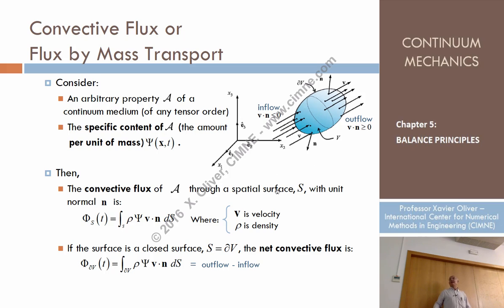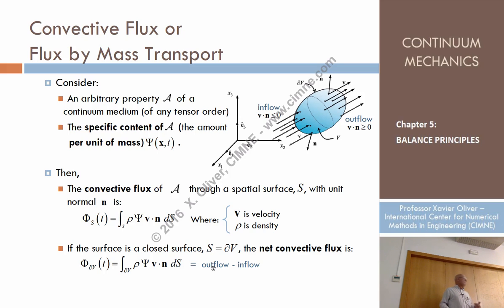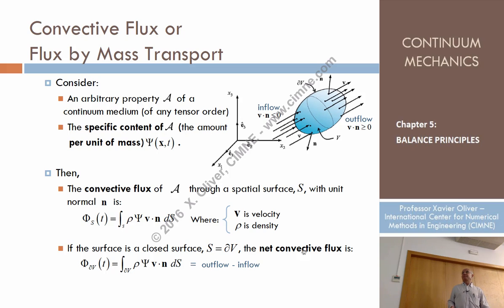If the net convective flux is positive, more property exits than enters. If negative, more property comes in than goes out. The convective flux concept applies to both open and closed surfaces — the only distinction is that for closed surfaces, the normal is always defined as outward.